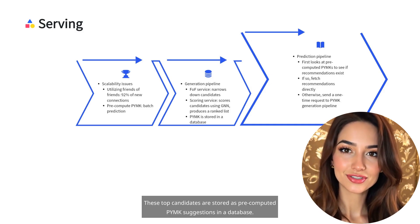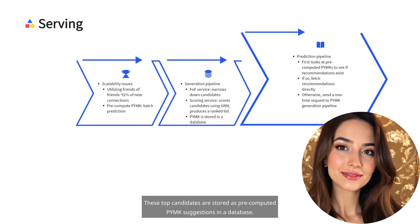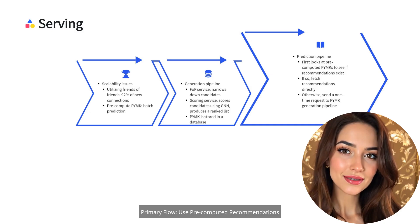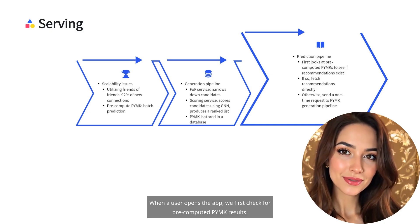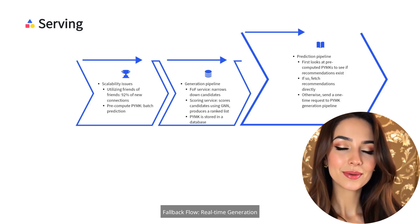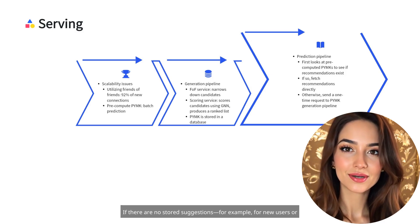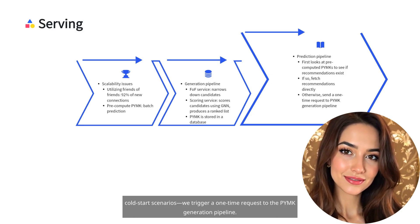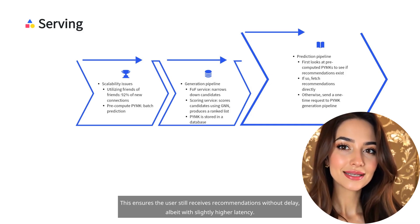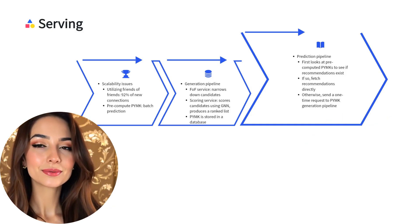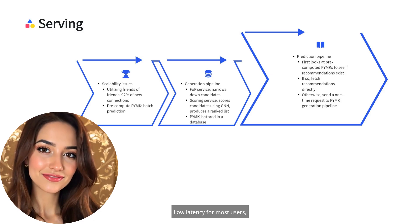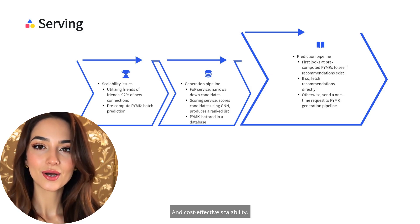These top candidates are stored as pre-computed PYMK suggestions in a database, allowing us to serve recommendations with minimal latency at inference time. For online serving, the primary flow checks for pre-computed PYMK results when a user opens the app — if they exist, we serve them instantly with no extra computation required. As a fallback for new users or cold-start scenarios, we trigger a one-time request to the PYMK generation pipeline, ensuring the user still receives recommendations, albeit with slightly higher latency. This hybrid strategy — batch prediction for the majority, real-time fallback for exceptions — helps us achieve low latency for most users, freshness of recommendations via regular updates, and cost-effective scalability.